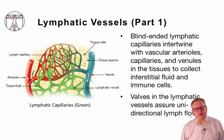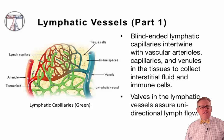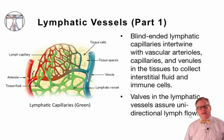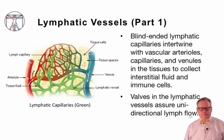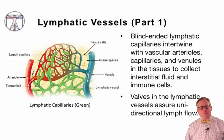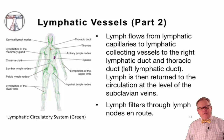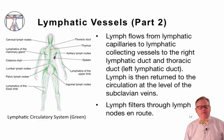The lymphatic vessels are located throughout the body. These are blind-ended capillaries that intertwine with the arterioles, capillaries, and venules of the vascular system. These blind-ended lymphatic capillaries are in the tissues and serve to absorb the interstitial fluid bathing the tissues. Valves in the lymphatic vessels ensure that lymph can only flow in one direction, back towards the main circulatory system. The lymph flows from the lymphatic capillaries to lymphatic collecting vessels, to the right lymphatic duct, and finally to the thoracic duct where it dumps back into the blood. The lymph is returned to the vasculature at the level of the subclavian veins.